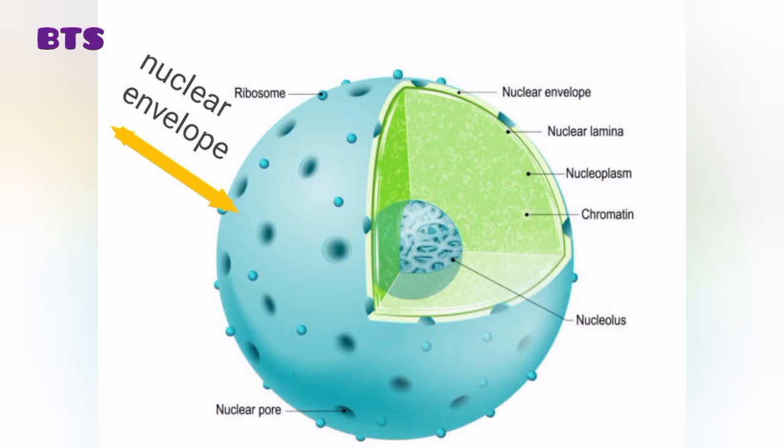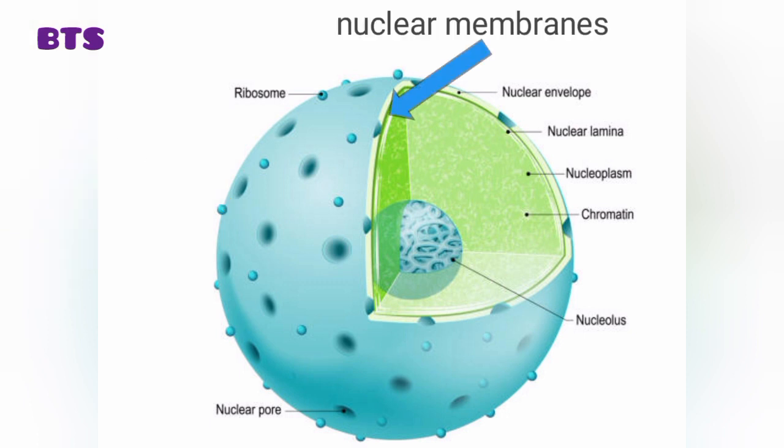Structure of nucleus. Nuclear envelope: typically, it is the most evident organelle in the cell. The nucleus is completely bound by two membranes and is enveloped by a structure referred to as the nuclear envelope. There are two membranes known as the inner nuclear membrane and outer nuclear membrane, which distinguish nuclear content and cytoplasm.